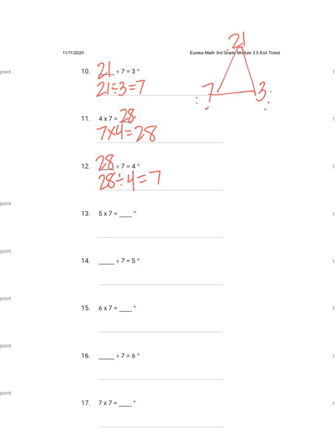Five times seven. We can count by fives seven times: five, ten, fifteen, twenty, twenty-five, thirty, thirty-five. Or we can count by seven five times: seven, fourteen, twenty-one, twenty-eight, thirty-five. Five times seven is thirty-five. Seven times five is also thirty-five. Thirty-five divided by seven is five. Thirty-five divided by five equals seven.